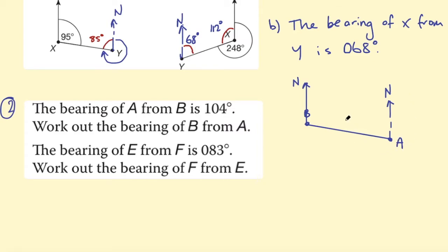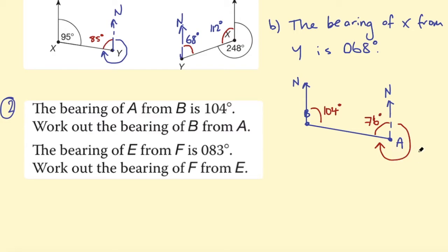Drawing a north line at A as well, remembering to measure clockwise, I label the angle as 104 degrees. First I find the interior angle: 180 take 104 is 76 degrees. Then to get the full bearing going around the outside, 360 take 76 gives 284 degrees. So the bearing of B from A is 284 degrees.